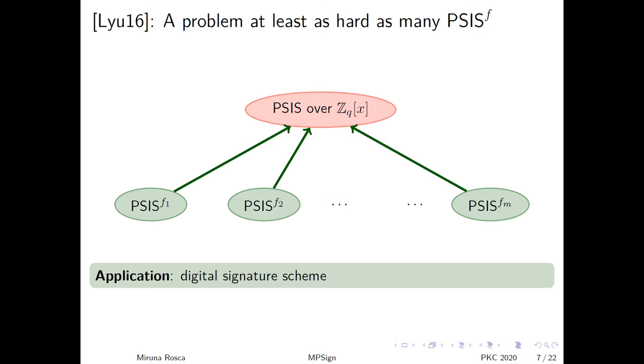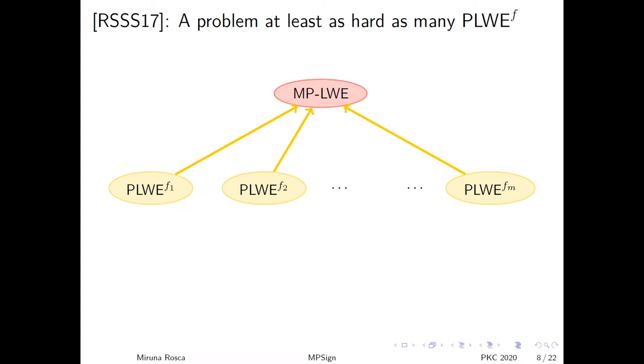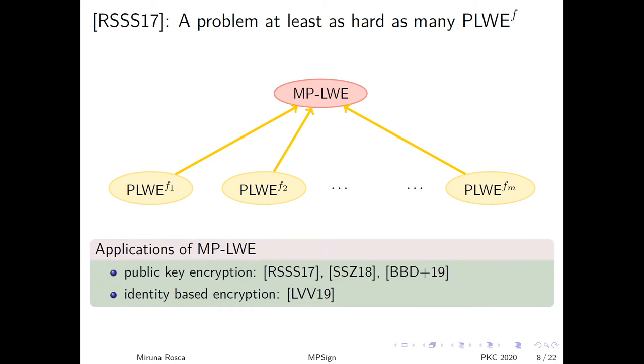He showed that this problem can also be used in crypto. He built a digital signature scheme whose security proof relies on the hardness of polynomial SIS over Z_q[x]. Later on, we managed to describe a PLWE analog, we introduced middle product learning with errors, and we proved that this new problem is at least as hard as polynomial learning with errors for many f's. Since its introduction, middle product learning with errors and different variants of it have been used to build public key encryption, identity-based encryption.